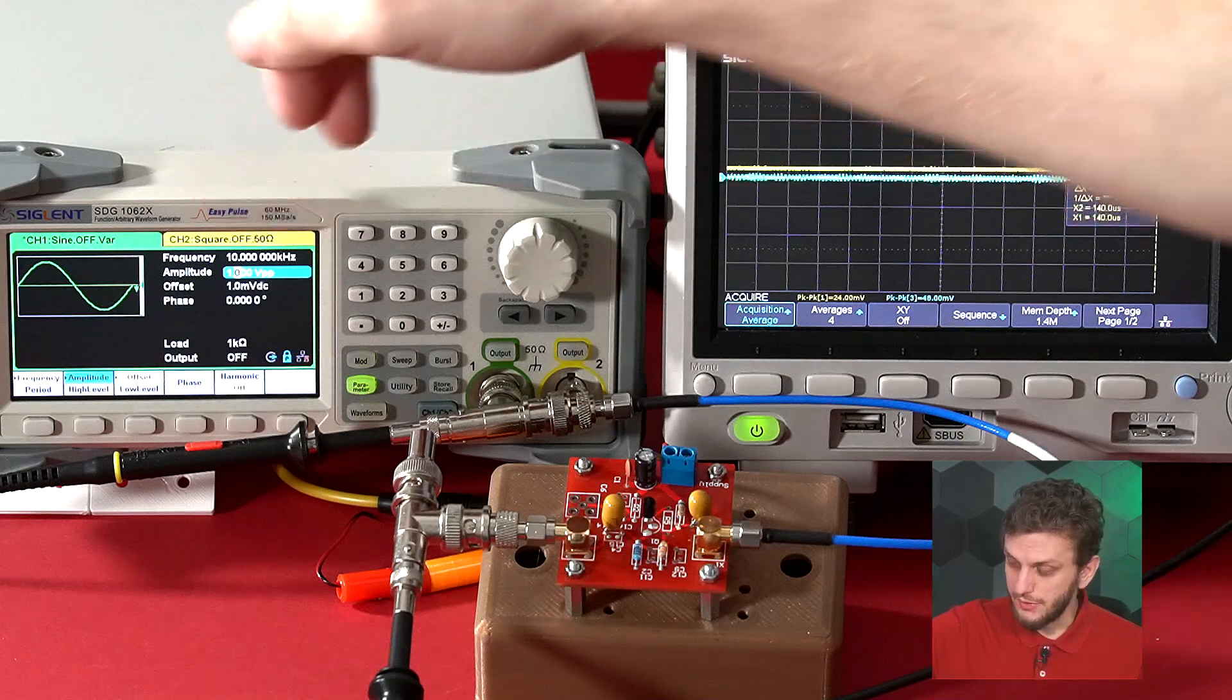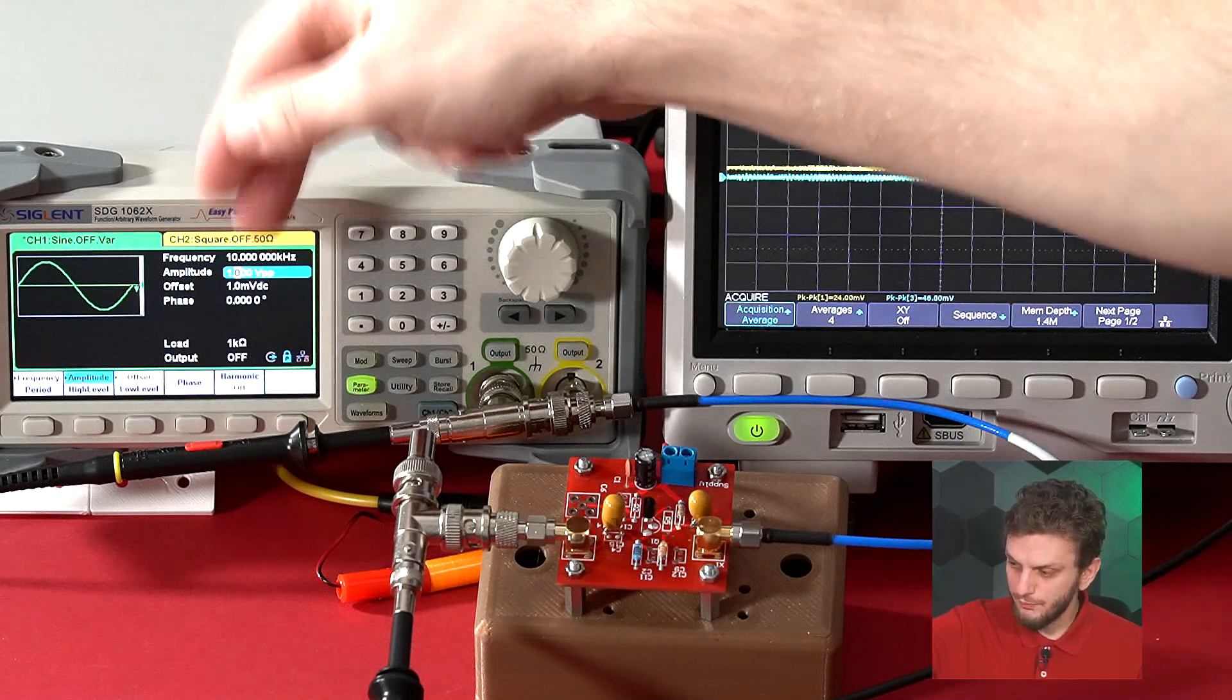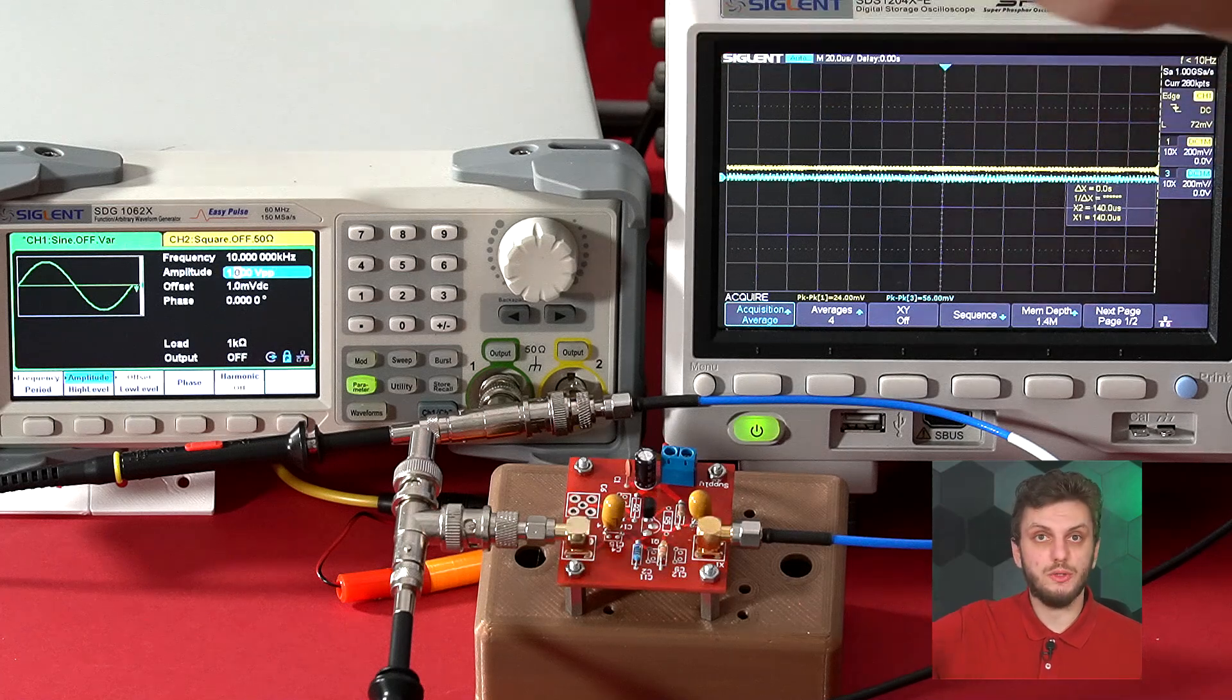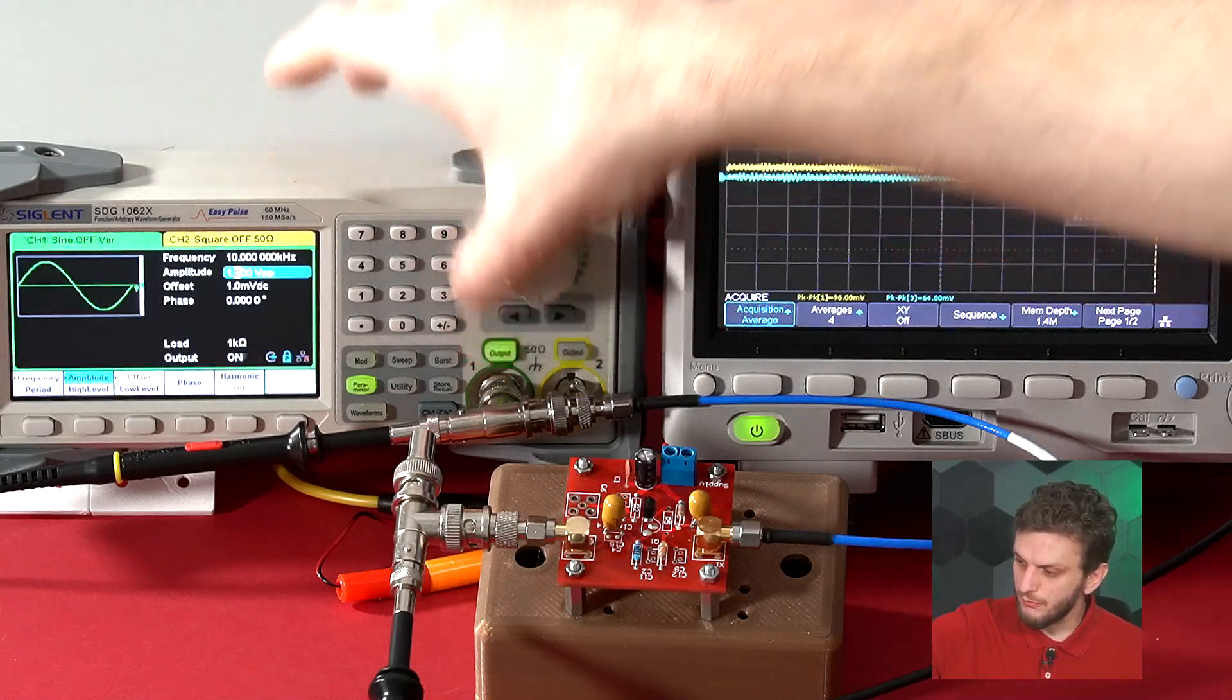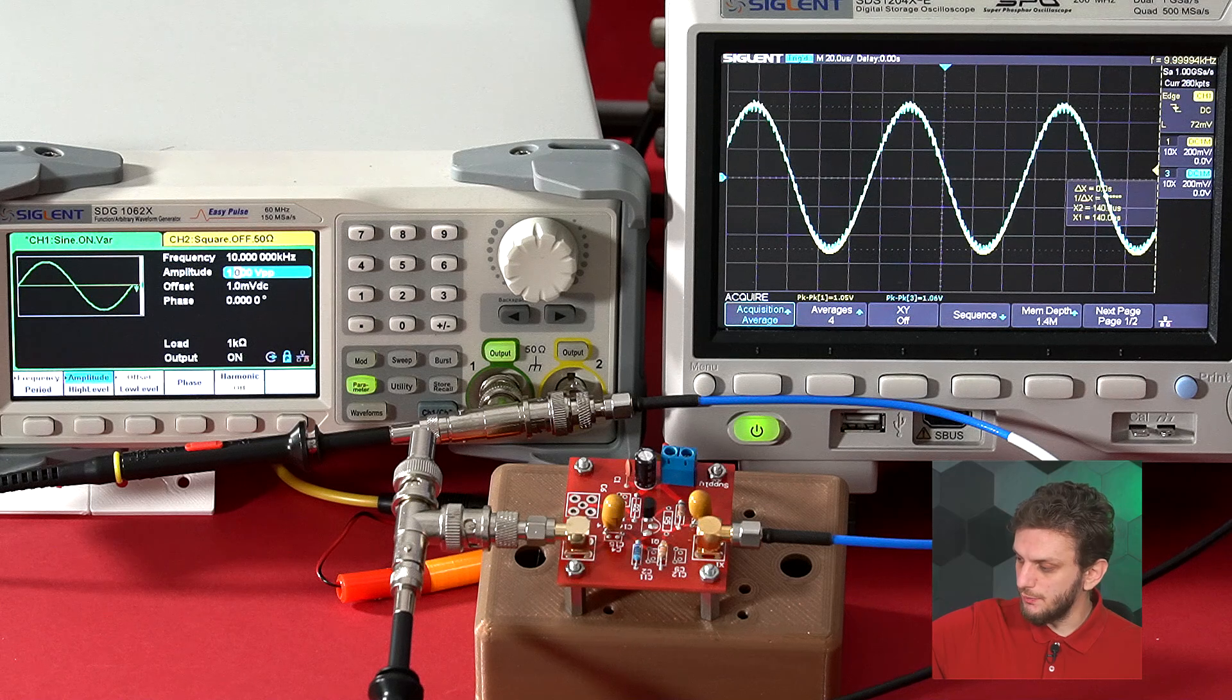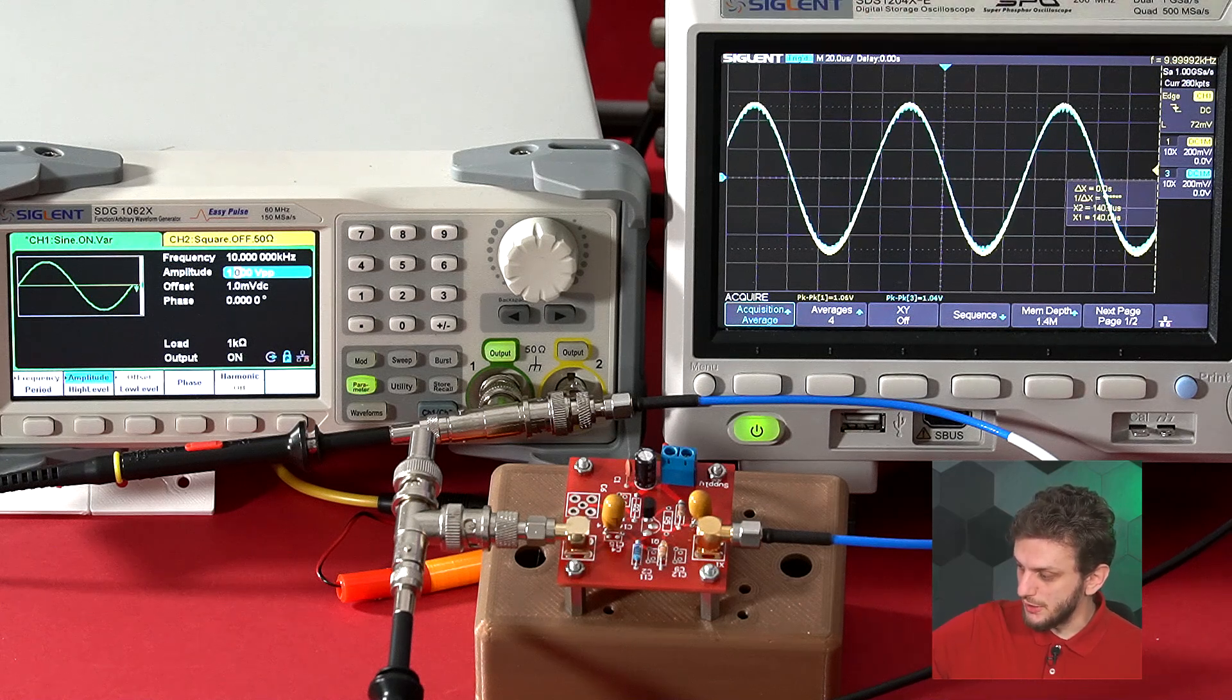As test signal, I have a 10 kHz signal, which we can start with a 1 volt peak-to-peak amplitude. If we do this and we observe the input and output signal, the yellow and blue one.